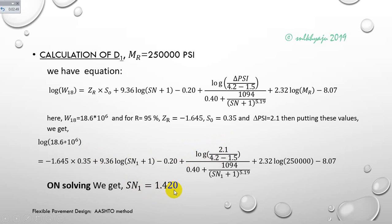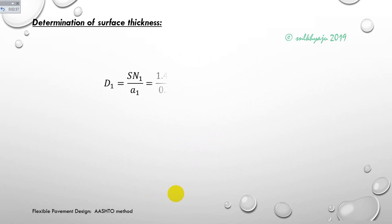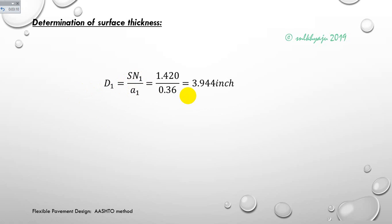Determination of surface thickness: d1 equals structural number SN1 divided by a1, calculated as 3.944 inches. So the thickness of the wearing course is determined as 3.944 inches.